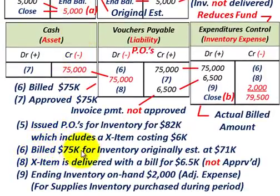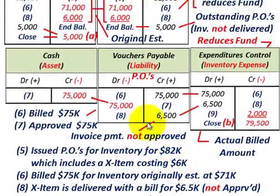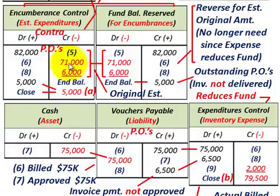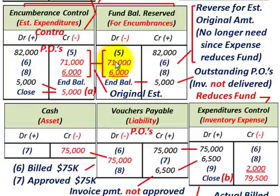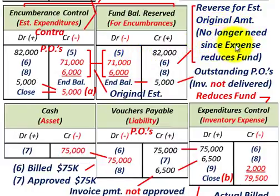We're going to be billed for $75,000 worth of inventory that we originally estimated to cost $71,000. We move to our encumbrances control account and reduce it by $71,000 — credit it for $71,000. We also take our fund balance reserve and debit or reduce it by $71,000 for the inventory we've now been billed for and received. We reverse the original estimated amount — not the actual billed amount — through the encumbrances control and fund balance reserve, because those controls are no longer needed.